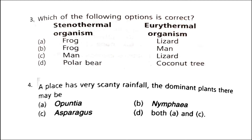Next: which of the following options is correct regarding stenothermal organisms and eurythermal organisms? The correct option is option B. Organisms with a narrow range of temperature tolerance are called stenothermal organisms, e.g., polar bear, frog, lizards, coconut, etc. Organisms with a wide range of temperature tolerance are called eurythermal organisms, e.g., most mammals and birds.